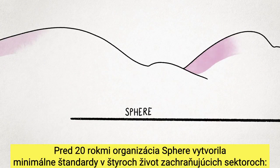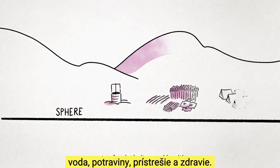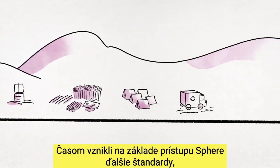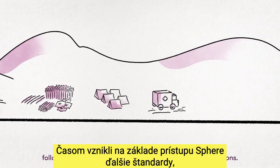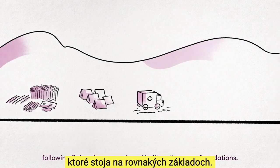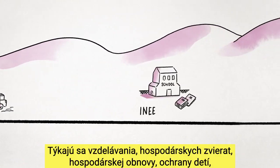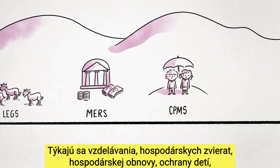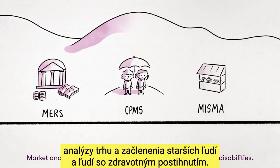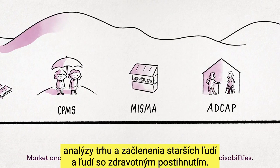Twenty years ago, Sphere developed minimum standards in four life-saving sectors: water, food, shelter, and health. Over time, more standards have been developed following Sphere's approach and built on the same foundations. These standards cover education, livestock, economic recovery, child protection, market analysis, and inclusion of older people and people with disabilities.